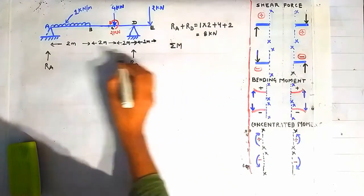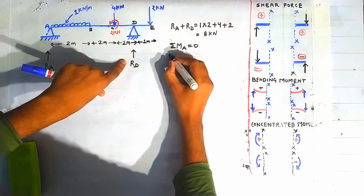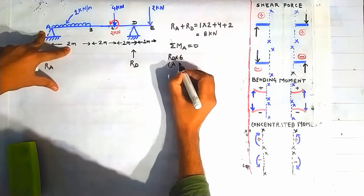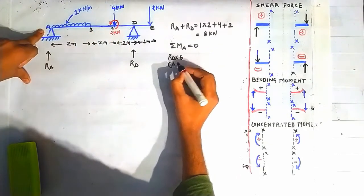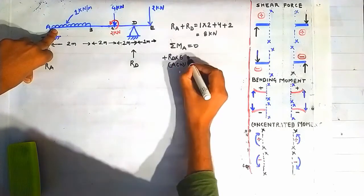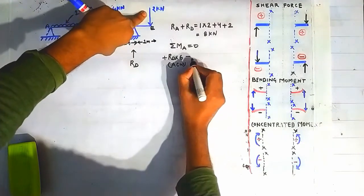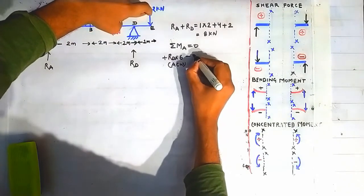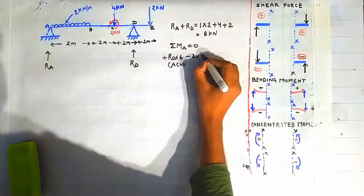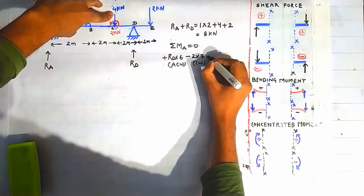Taking summation of moments about support A equal to zero: due to force RD there is a moment of magnitude RD × 6 (distance 2+2+2 from point A), which tries to rotate the beam anticlockwise about point A — taken as positive. This force tries to rotate the beam clockwise, which is taken as negative. The moment due to the 2 kN load is its magnitude into the distance from A, which is 2+2+2+1, acting clockwise.